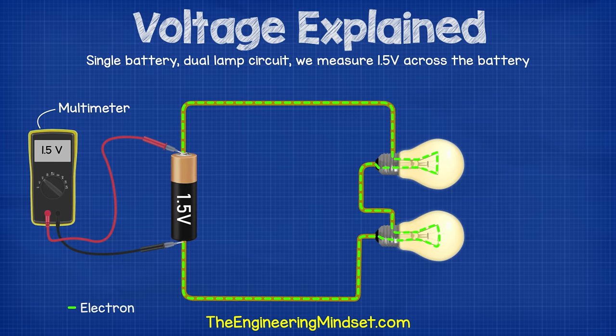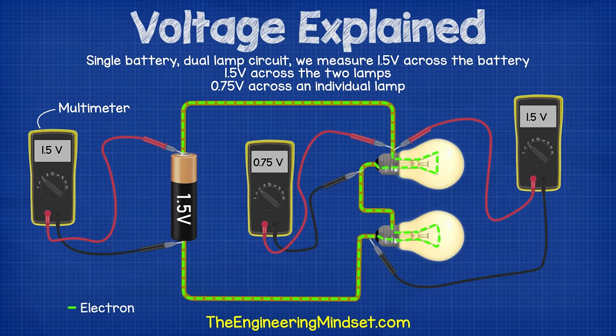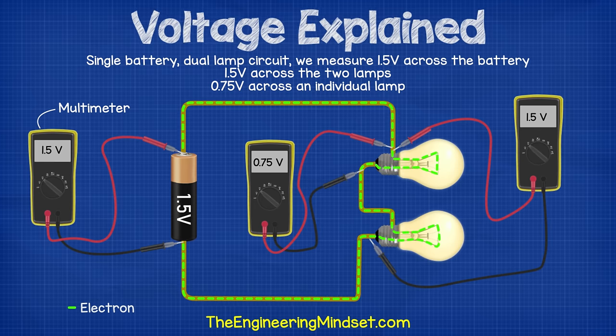In a two-lamp series circuit, we measure 1.5 volts across the battery, 1.5 volts across the two lamps combined, but 0.75 volts across the lamps individually. The voltage or potential has been shared between the lamps to both provide light and heat. The lamps are dimmer because the voltage has been shared or divided. Again, we'll cover this in more detail in our electrical circuits tutorials.